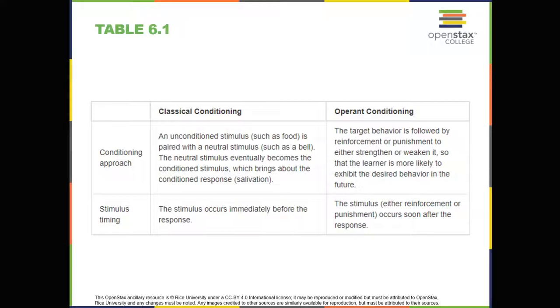The previous section focused on classical conditioning. Remember that in classical conditioning, something in the environment triggers a reflex automatically, and researchers train the organism to react to a different stimulus. Now we turn to operant conditioning. In operant conditioning, organisms learn to associate a behavior and its consequence.